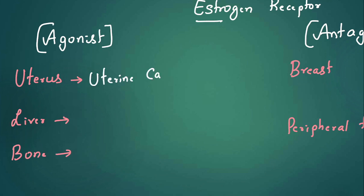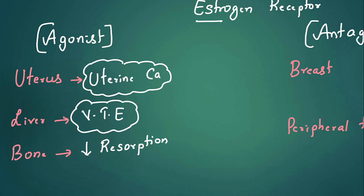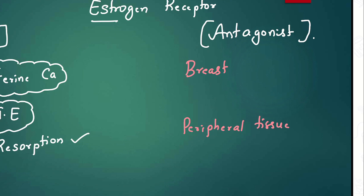In the liver, estrogen is stimulated, which increases clotting factors and can lead to venous thromboembolism. In the bone, it decreases resorption, which is good for bone. So two adverse effects of tamoxifen are: increased risk of uterine cancer and increased risk of venous thromboembolism. On the positive side, it prevents osteoporosis. In breast tissue it acts as an antagonist, blocking the estrogen effect — that's why it is used for both male and female breast cancer.